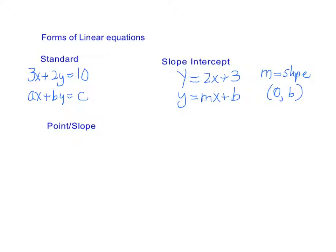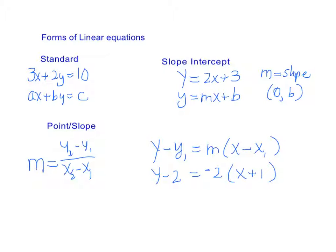And then a reminder of point slope. Point slope comes from the slope formula. If you remember that slope is the change in y over the change in x, right? So two points on the line, and you can determine its slope. So point slope looks like this: y minus y sub 1 equals m times x minus x sub 1. So y minus 2 equals negative 2x plus 1. That means that it has a slope of negative 2, and it passes through the point negative 1, 2.